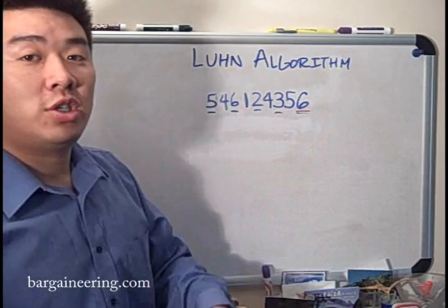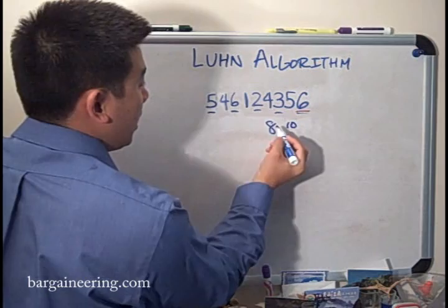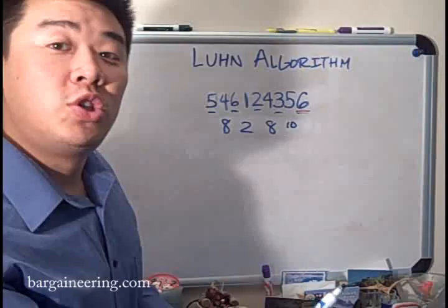What you'll do is the rightmost digit is what's known as a check digit. First you ignore that for now, and then every other number you multiply by 2. So the 5 becomes a 10, the 4 becomes an 8, 1 becomes a 2, and 4 becomes another 8.